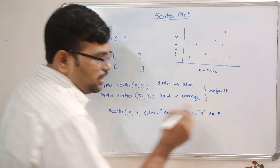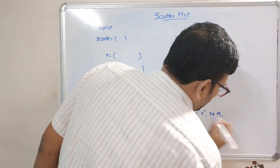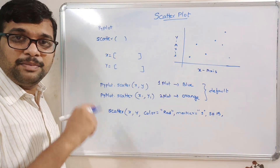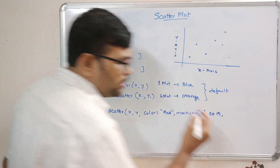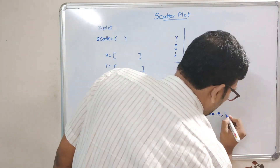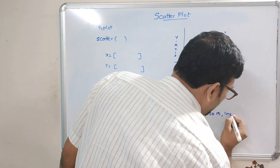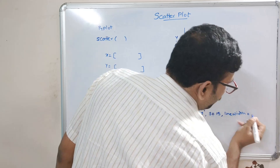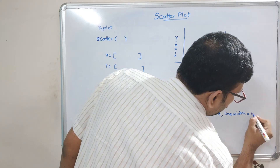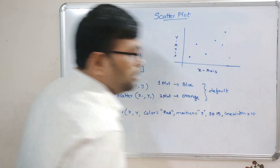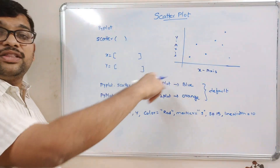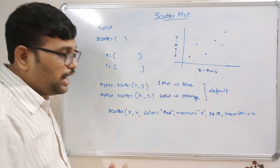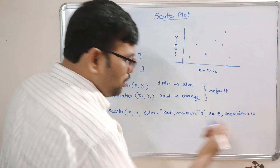After that, you can also change the line width - that means the marker width. That can be done with the help of a parameter called linewidth. If you give a width of 10, the line width of the marker will be changed to 10.